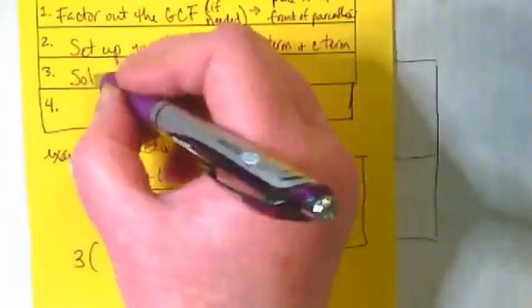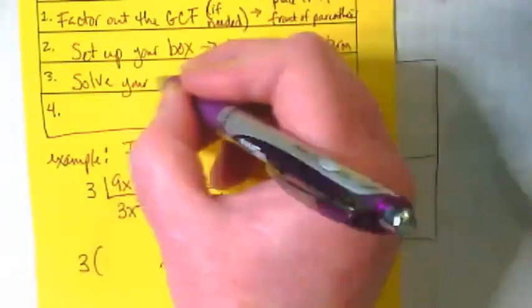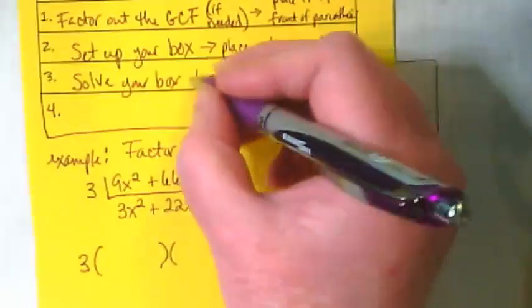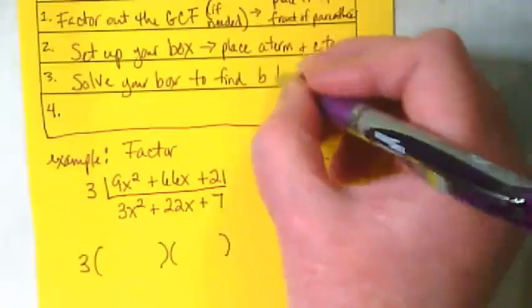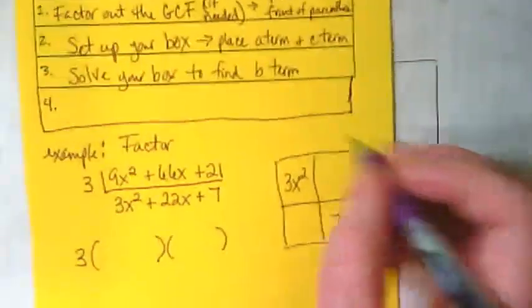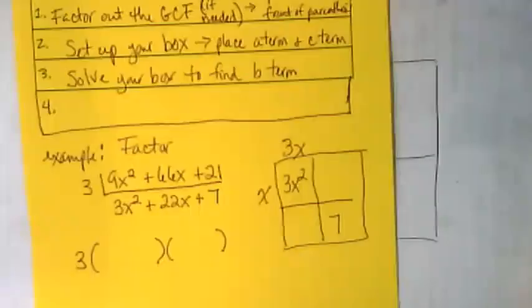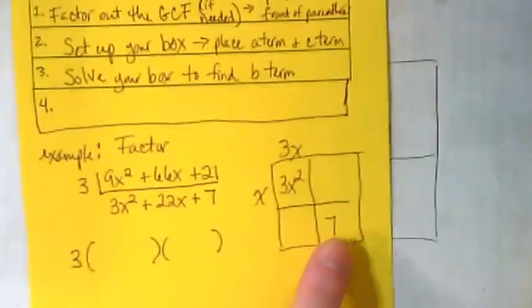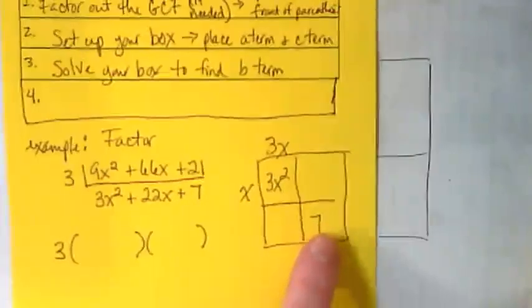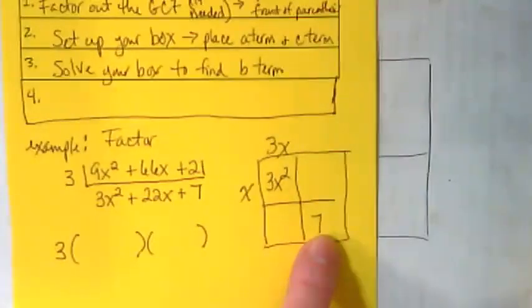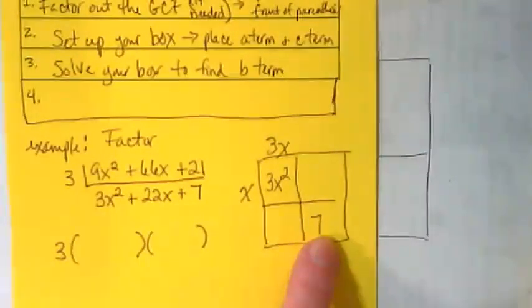And now we're going to, for step 3, solve the box to find the B term. So we know we're going to have to have a 3x on one of these and an x on the other. We also know that you can only get what's in this box by multiplying. And 7 makes this a pretty easy one, because there's only two factors of 7, right? And they are 7 and 1.